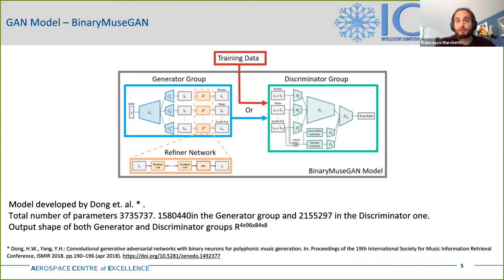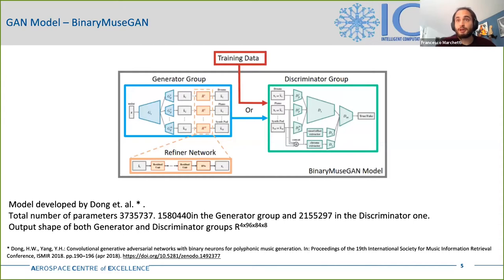Binary MuseGAN is structured as follows. The generator group is composed by a shared generator network among all tracks and a private generator for each track. The shared generator GS is responsible for generating a high-level representation of the output music shared by all tracks, while the private generators GP convert the high-level music output into the final piano roll output for the corresponding track. Then a refiner network for each track refines the real-valued output of the generators into binary ones. The discriminator group is composed by a private discriminator for each track and a shared discriminator among all tracks, plus two other discriminators.